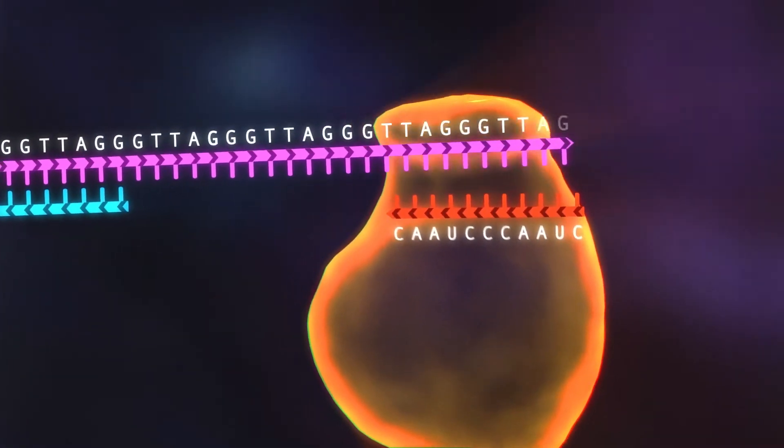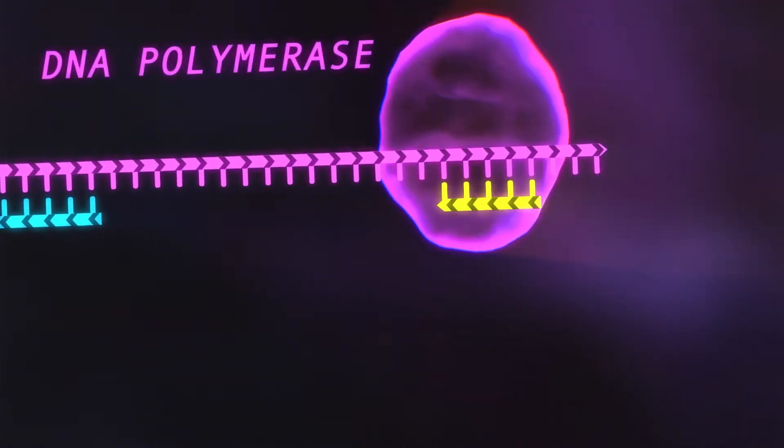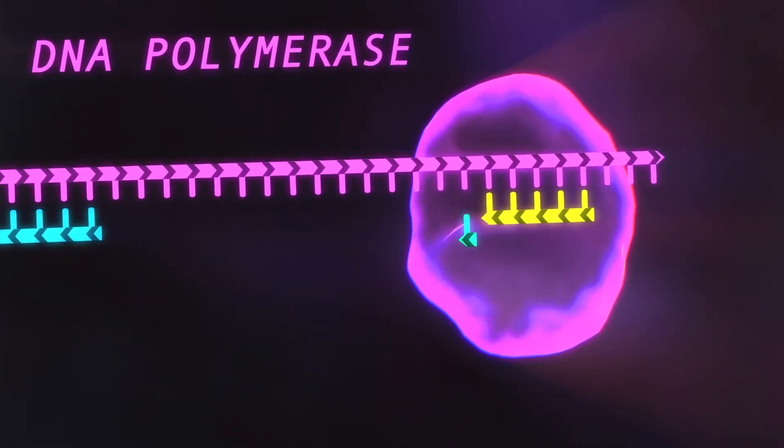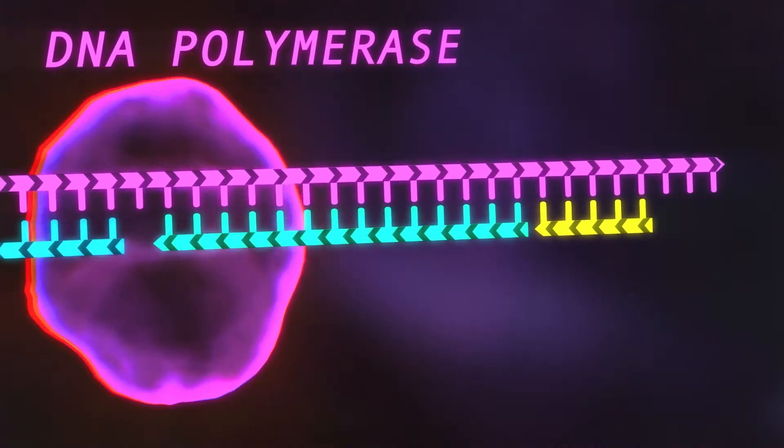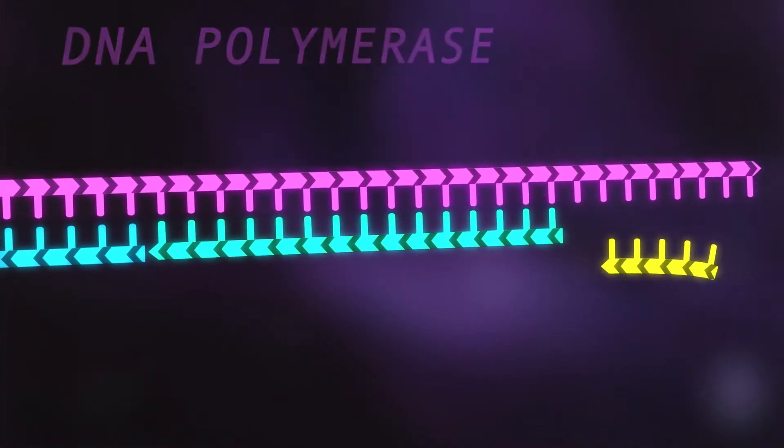After that, another enzyme called DNA polymerase can now attach to the overhang, copying the DNA strand that was elongated by telomerase.